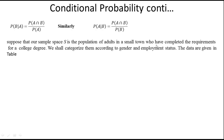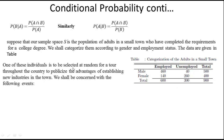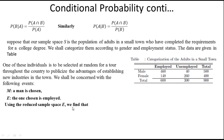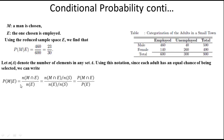Now consider another example. The sample space S is the population of adults in a small town who have completed requirements for a college degree, categorized by gender and employment status. The data includes employed, unemployed, male, and female counts. One individual from 900 is selected at random. We want to find the probability of selecting a man given that the person is employed. Using the reduced sample space E, P(M|E) = 460/600.